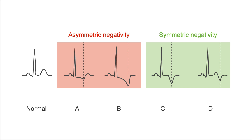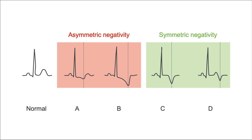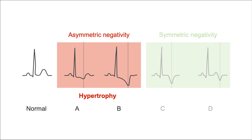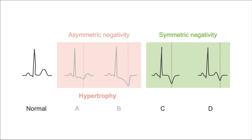Why is that important? Because these changes occur in two distinct settings with hugely different implications. Asymmetric changes usually occur in the setting of ventricular hypertrophy. When located over the left ventricle, left ventricular hypertrophy is probably present; when located over the right ventricle, right ventricular hypertrophy is likely present. You can use the hypertrophy criteria learned previously to confirm that assessment. When the T-waves are negative and symmetric, that's usually a sign that myocardial cells are dying off — most often seen in myocardial ischemia, though it can also occur in myocarditis.